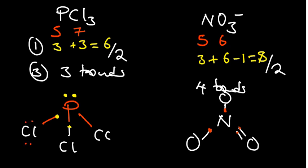We distribute the remaining valence electrons to the other atoms. Chlorine can take six electrons on the first structure. For the oxygens: the double-bonded oxygen gets four electrons, and each single-bonded oxygen gets six. The oxygen with the double bond did not contribute to that bond — all electrons came from nitrogen. With these two steps, you are able to come up with Lewis structures within the shortest period of time.